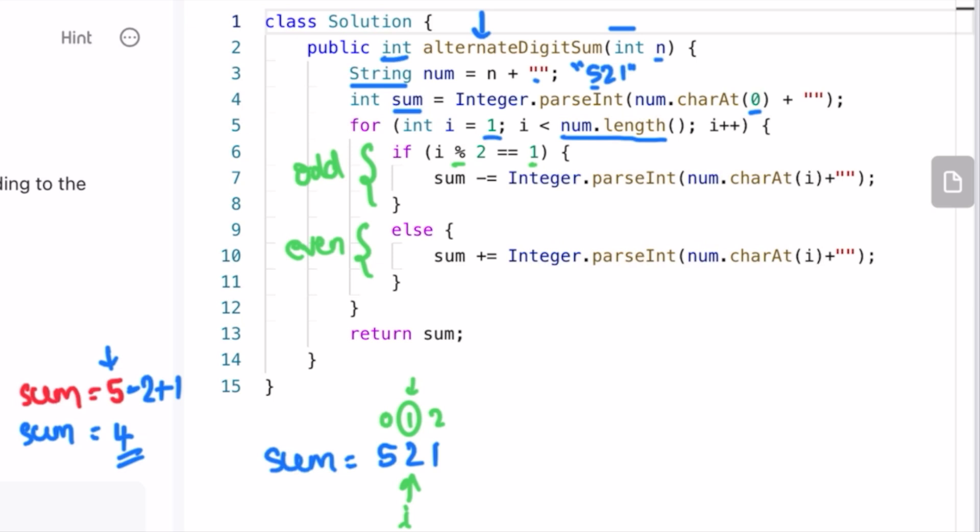Sum equals... now it is an odd number, so we need to subtract it. So 5 minus 2. Let's increment i. In the next iteration, i is here.